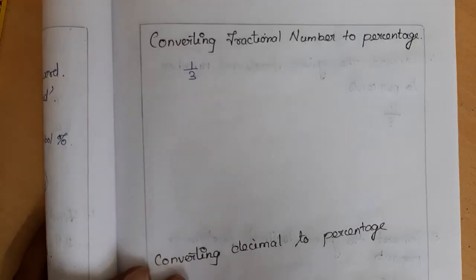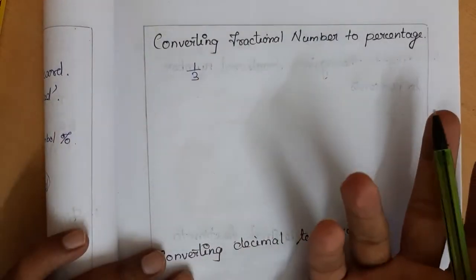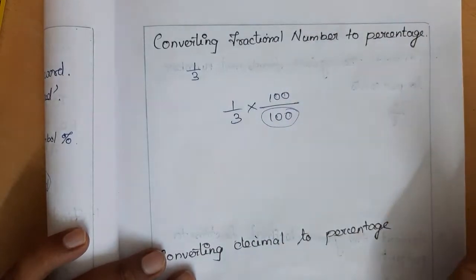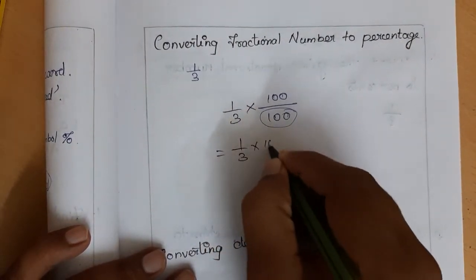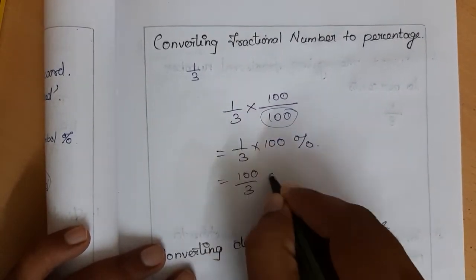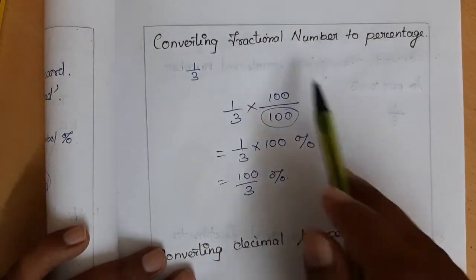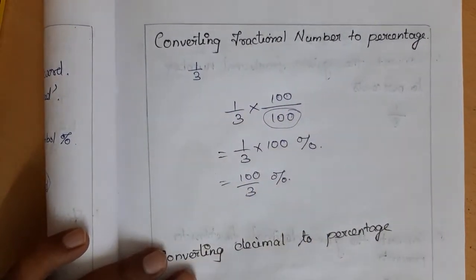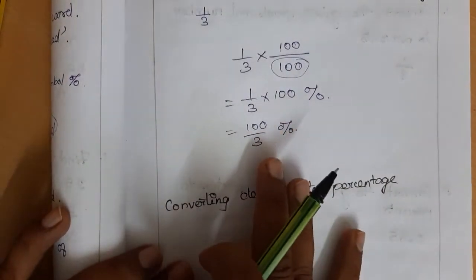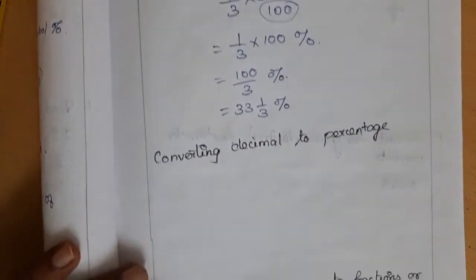Next, converting a fractional number to percentage. With the fraction 1/3, just multiply by 100 and divide by 100 — this out-of-100 will change to percentage. So 1/3 into 100 percent gives 100/3 percent. If we need to simplify further we can get decimals, but this fraction percentage is enough. We can also write it as the mixed fraction 33 and 1/3 percent.